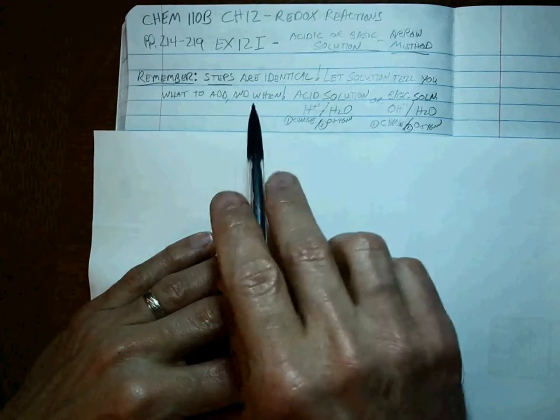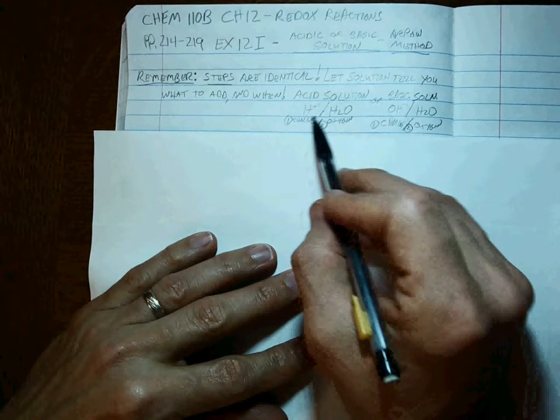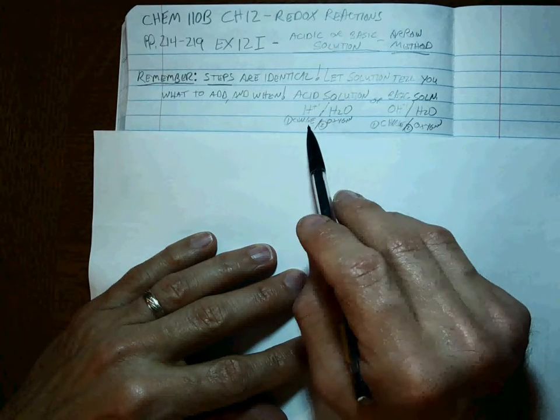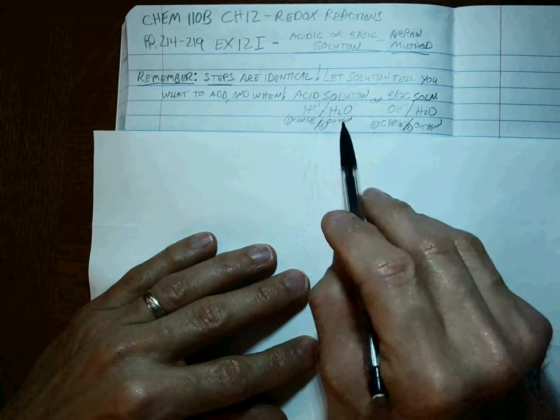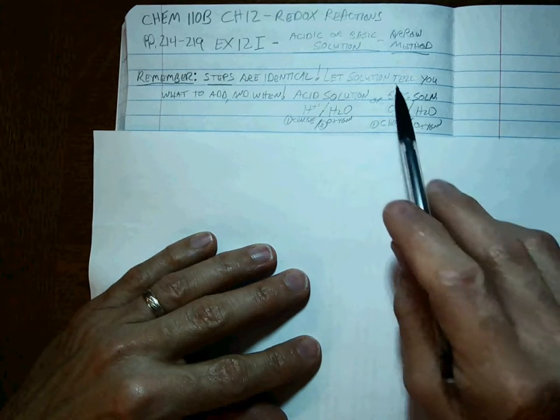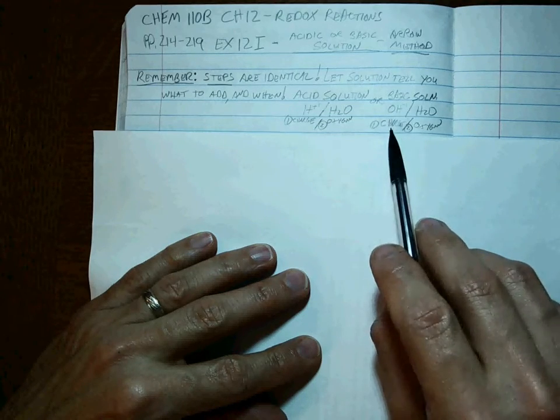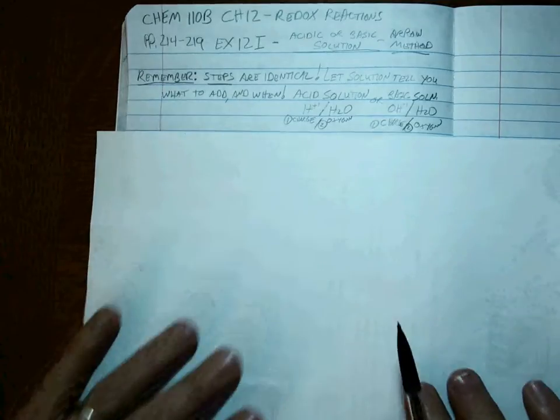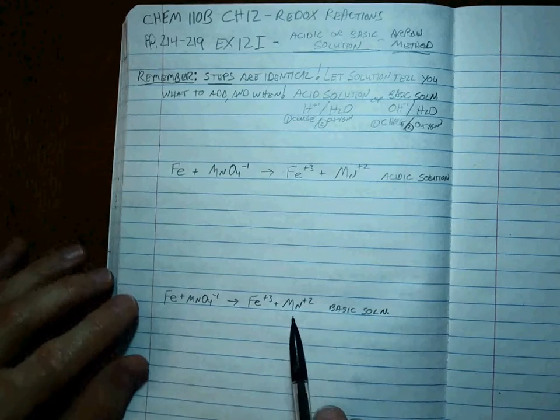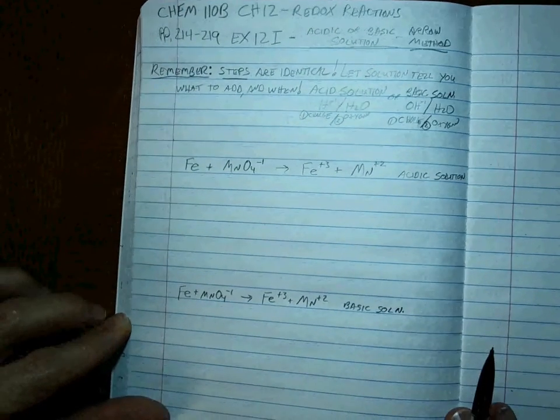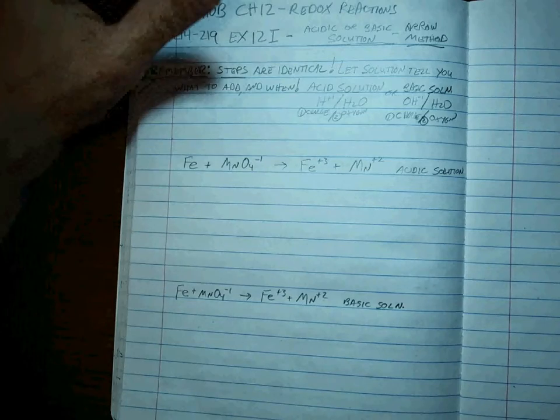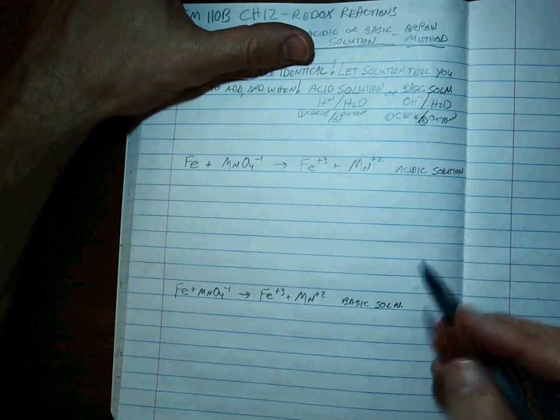Remember, the steps are identical from whatever they give you. Let the solution tell you what to add and when. Acidic solution means H plus and water - we always add the charged species first, and then the water to add the oxygen. If it's basic solution, you add the OH minus to balance the charge, and then water to balance the oxygen. Let's see how straightforward we can do those first six steps, because they're the same no matter what.